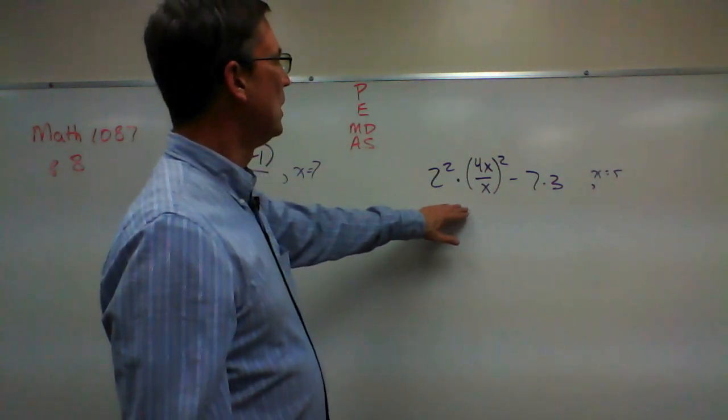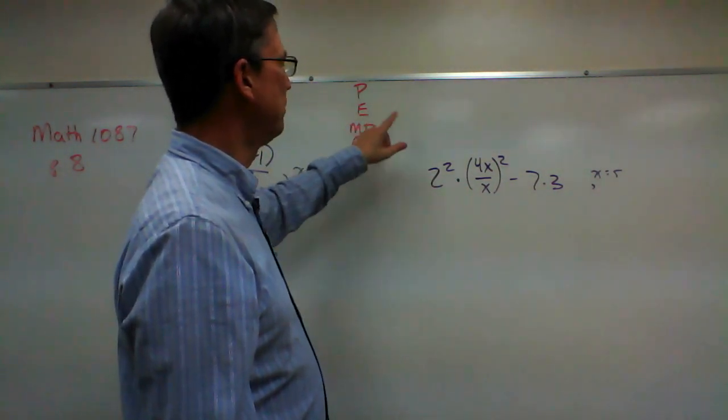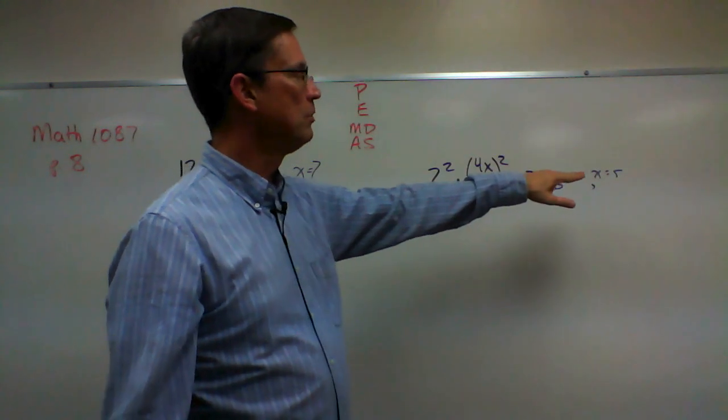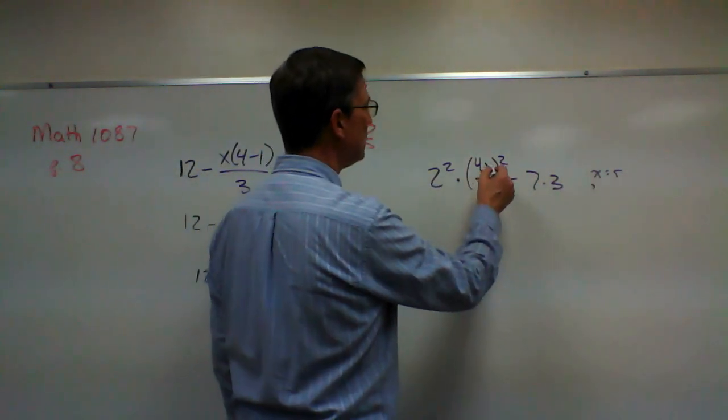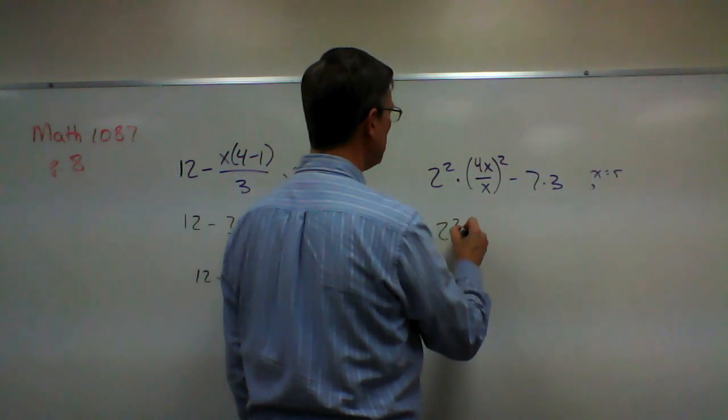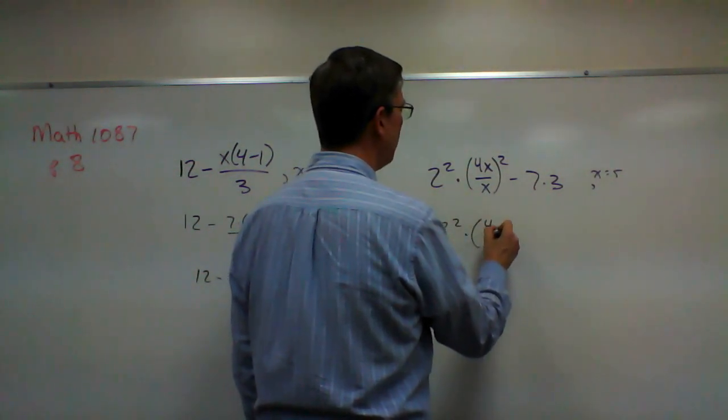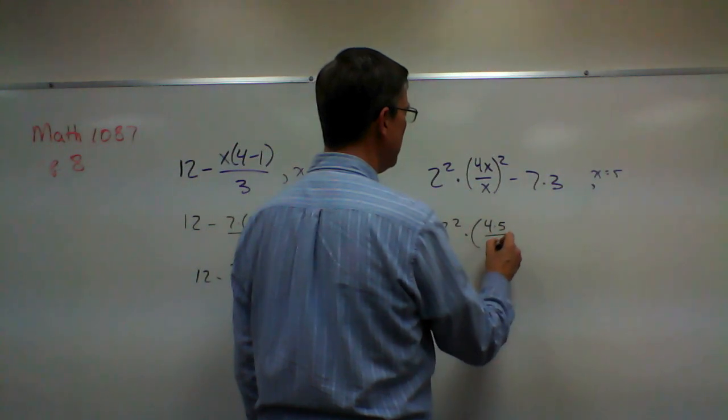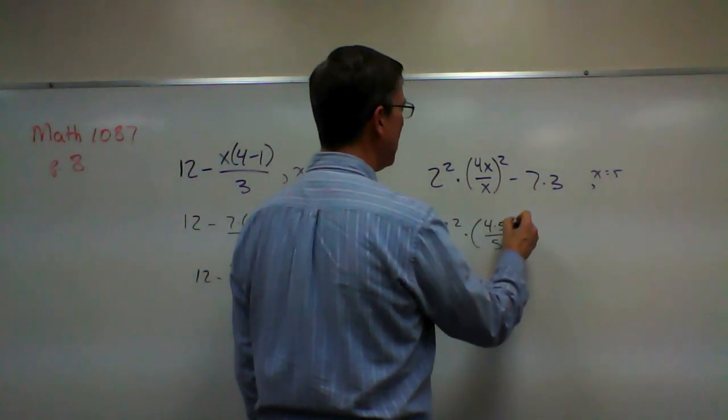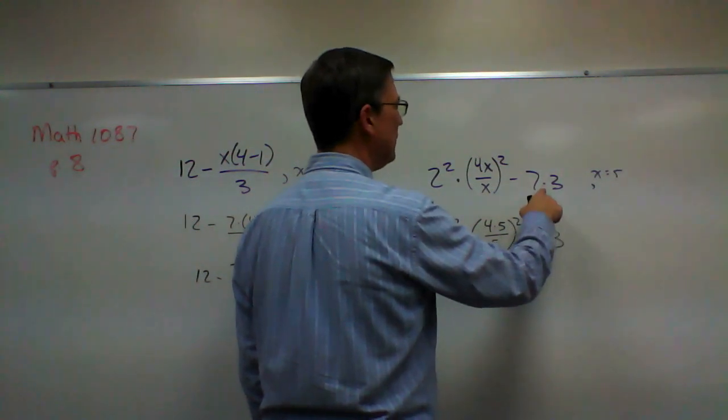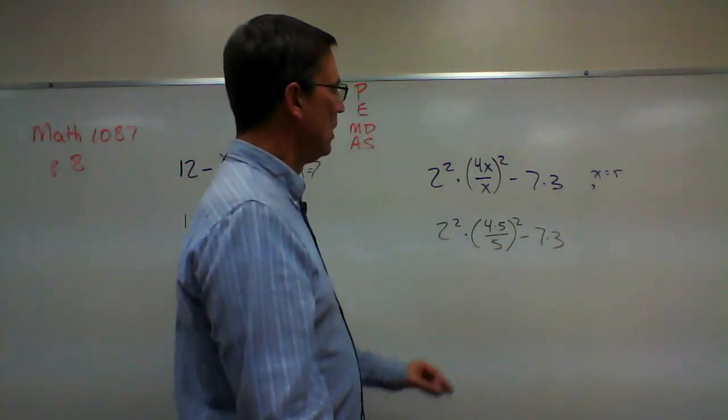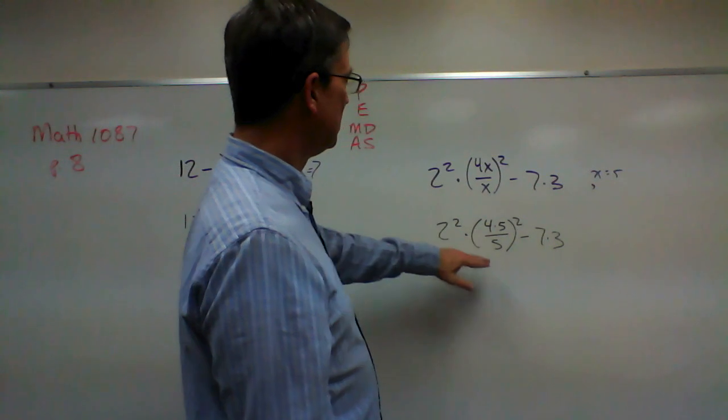Let's look at this one. This one we have exponents so it's a little bit different. I am told that x is 5, so I'm going to plug in 5 in place of x. So I get 2 squared times 4 times 5 divided by 5, the quantity squared, minus 7 times 3. So I want to do the parentheses first.